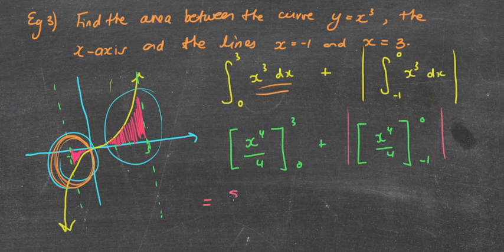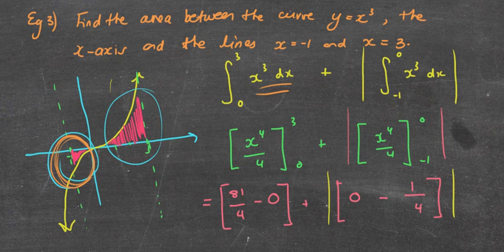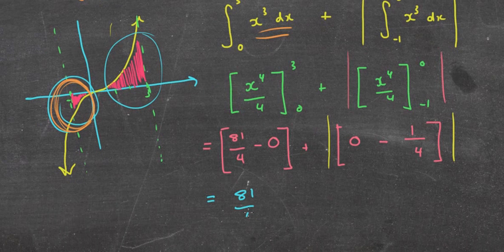So let's now chuck that in. We get 3⁴ which is 81/4, minus 0⁴ divided by 4. Well, it's just going to be 0. Plus. Now 0⁴ over 4 is 0, minus, chucking -1 in, is going to be 1/4. But remember, that will be the absolute value of it.